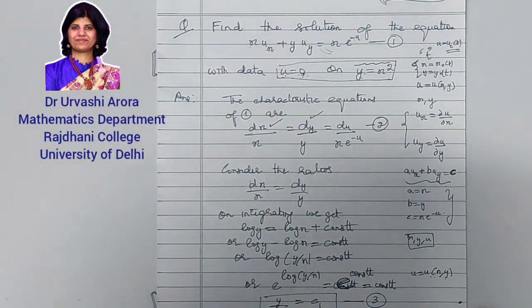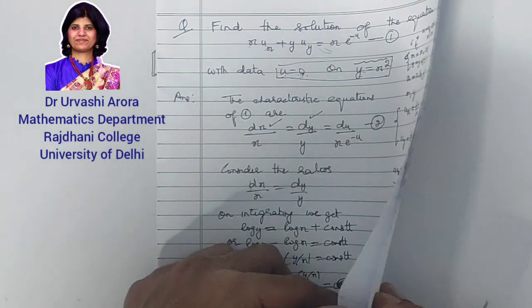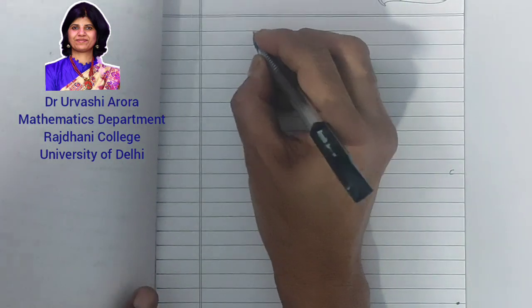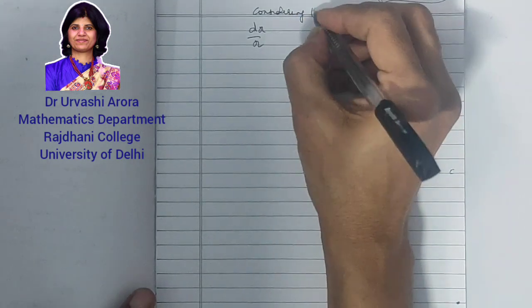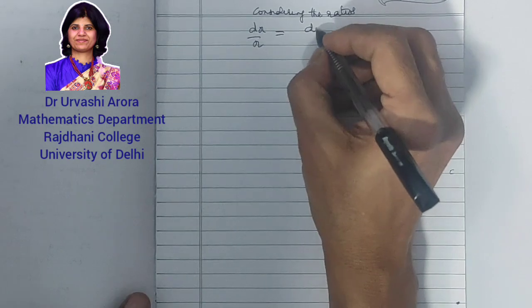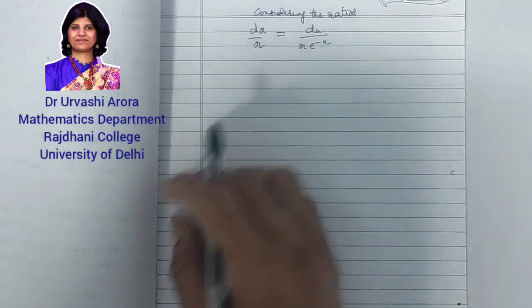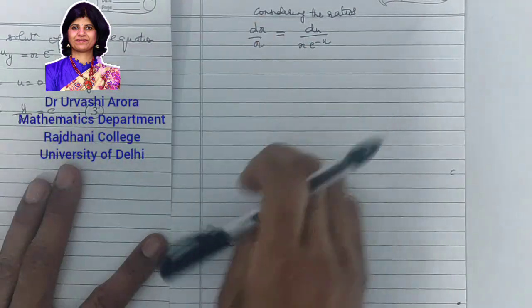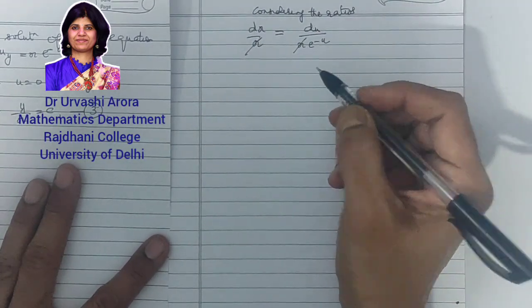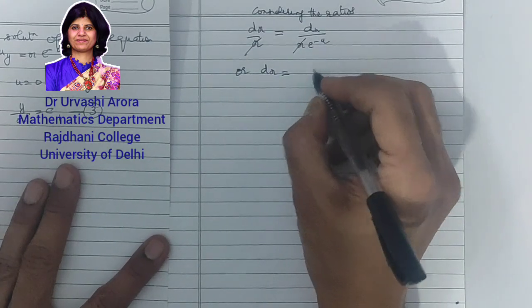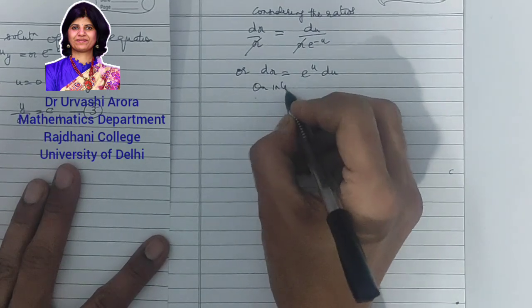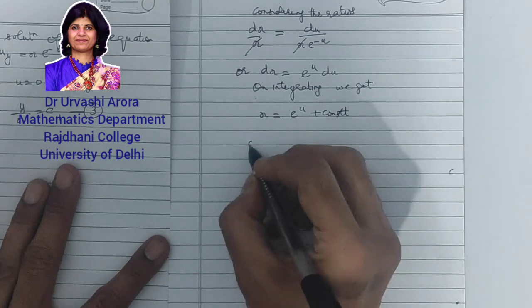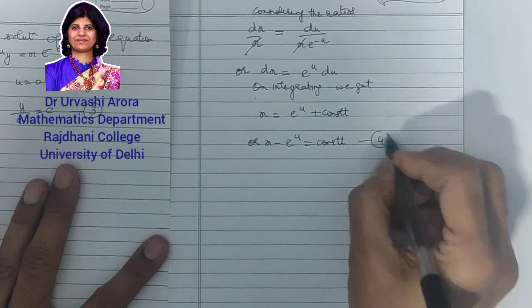Now considering the first and the third ratio: dx/x = du/(x·e^(-u)). The x's cancel, giving dx = e^u du. On integrating, we get x = e^u + constant, or x − e^u = constant. This is the second integral, which I mark as equation 4.